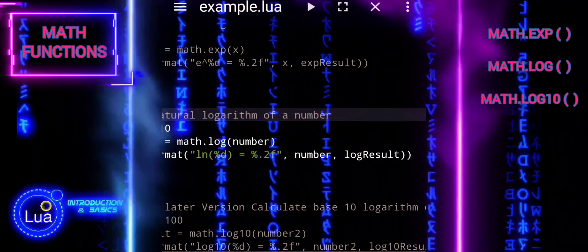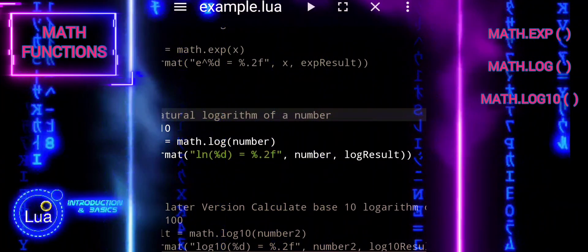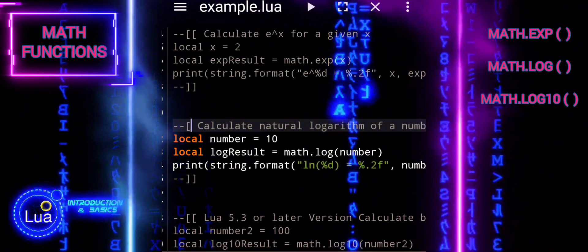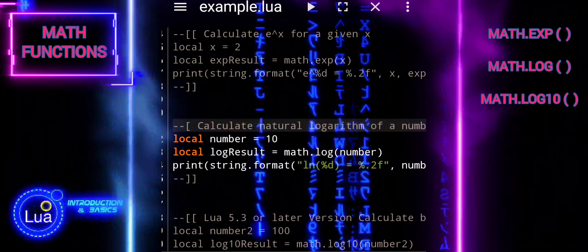The function returns the natural logarithm of its argument, number in this case. So, log_result will contain the natural logarithm of 10.